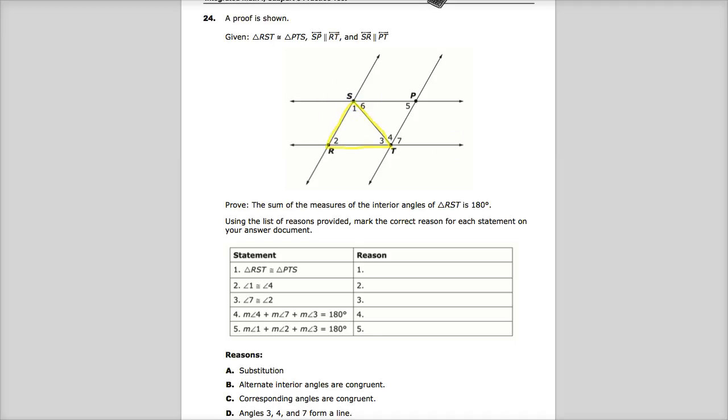There's where RST is located. And obviously, you may not be able to do this on your actual test because I don't think you're allowed to use highlighters, but you can see. Those are congruent. It says so right there. It also tells me that SP, so this line, because you see the little line part there, is parallel to RT.